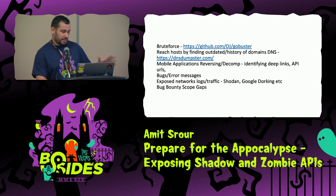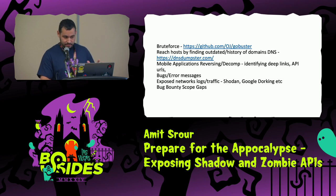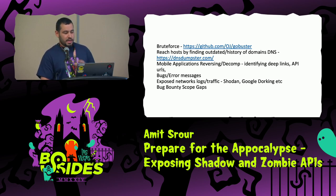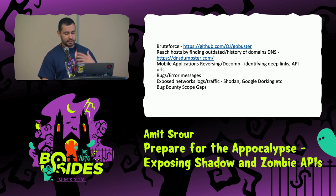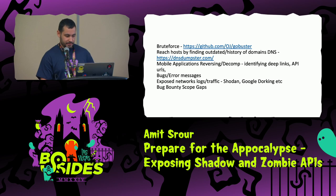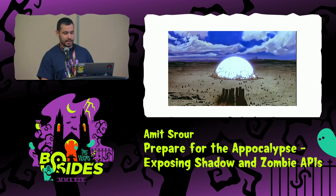Here's a list of how adversaries identify and discover APIs. Brute force — running a word list — is less than optimal but even Blue Teams use it to identify endpoints. You can identify domain names and hosts from DNS history. Decompiling mobile applications can link to APIs and reveal information. Bugs, error messages, logs, and traffic can also reveal APIs. Even bug bounty scopes might leak this.